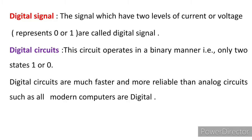What is a digital signal? Digit is concerned with binary digits. Signals which have two levels of current or voltage, represented by digit 0 or 1, are called digital signals.